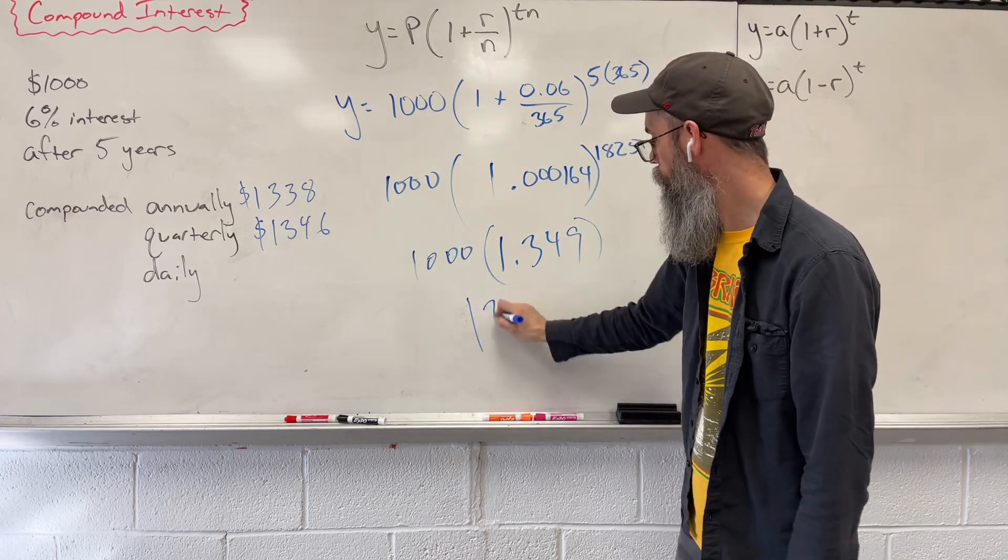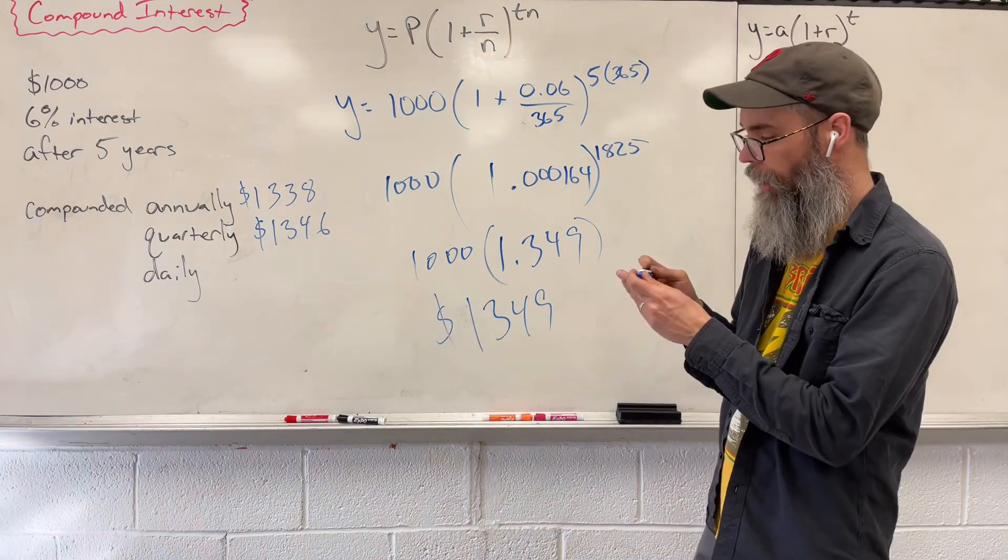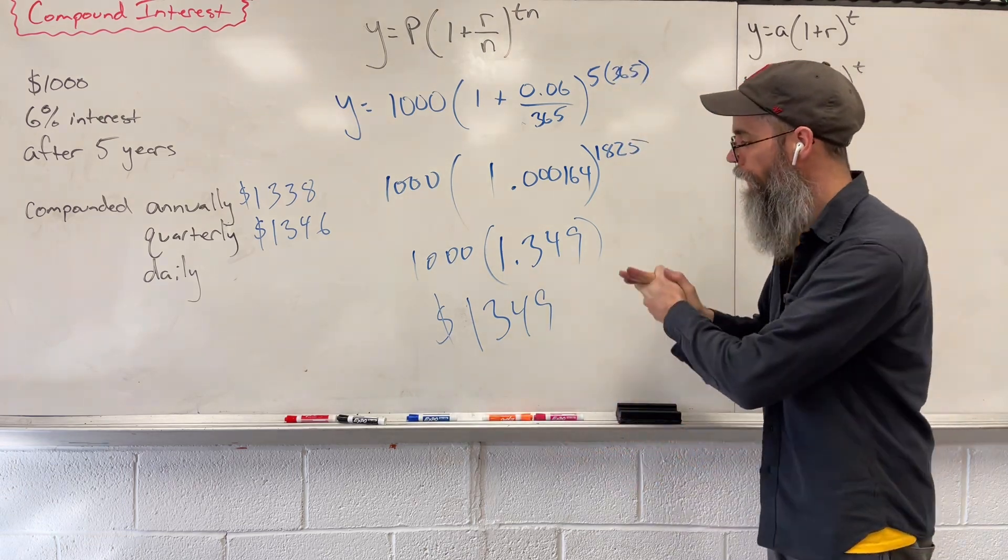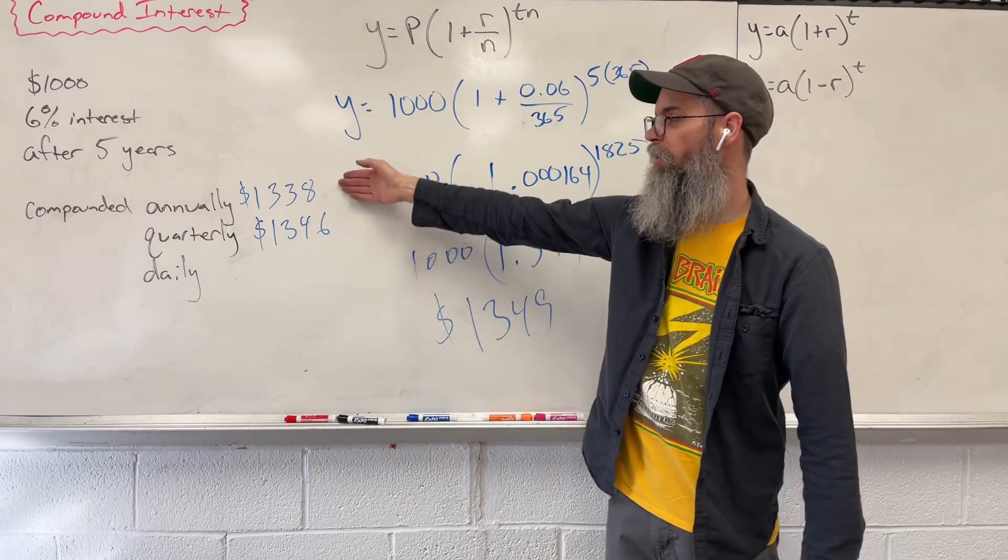Multiply by the 1,000. 1,349. So if we were to compound this daily, 365 days out of the year, we're now at $1,349 as opposed to these.